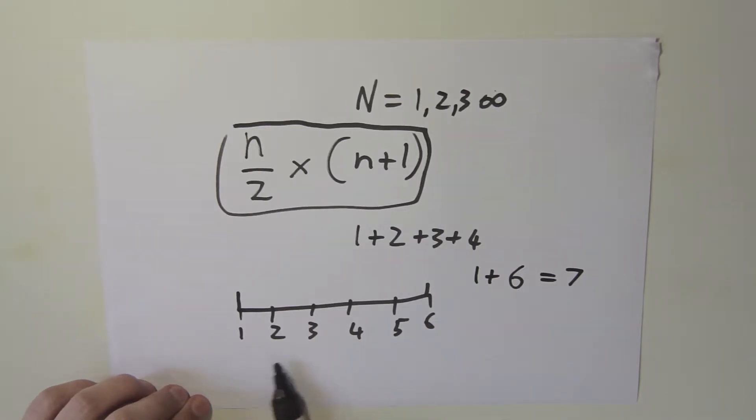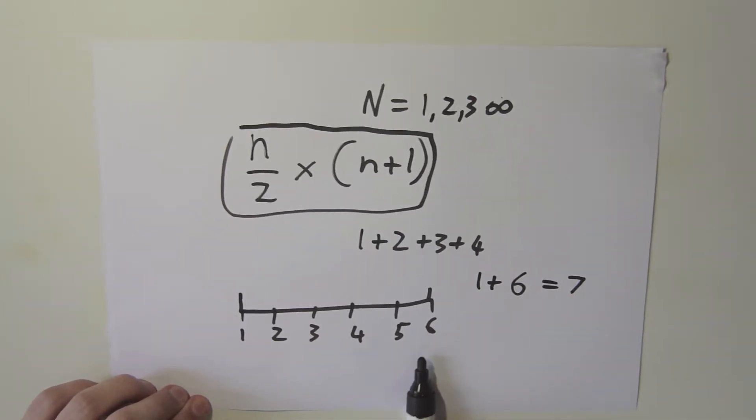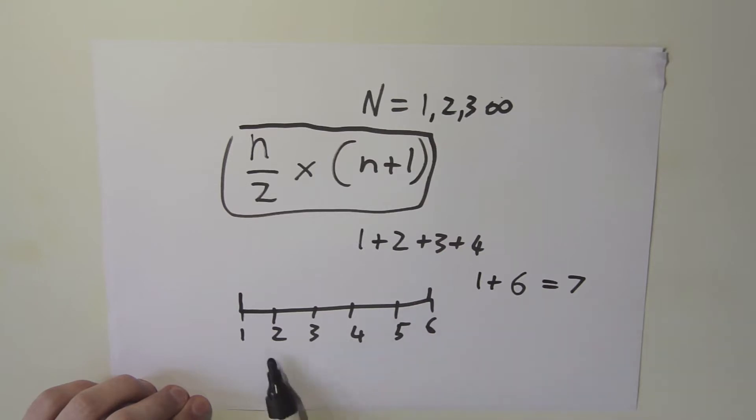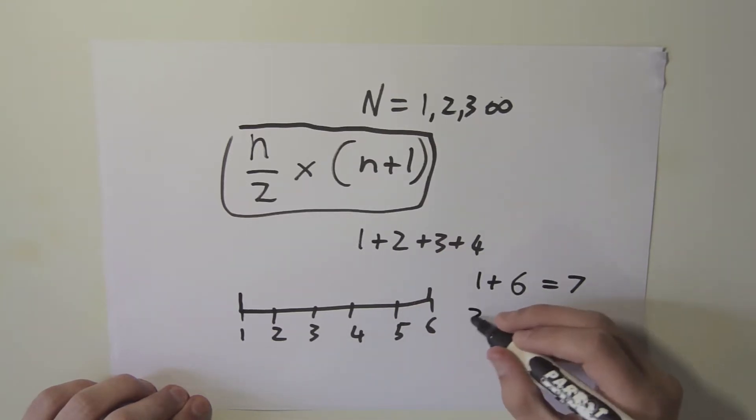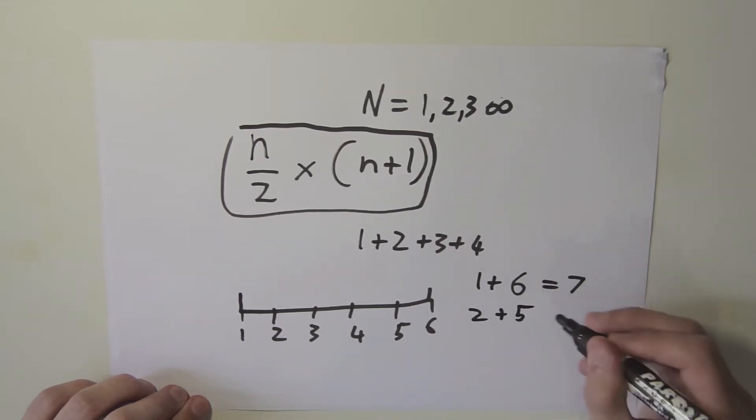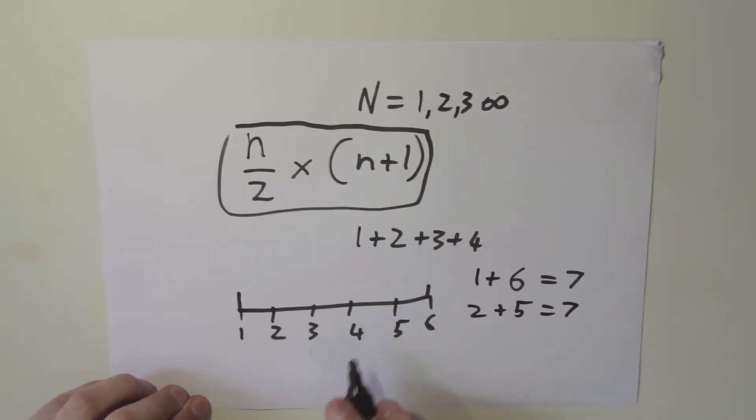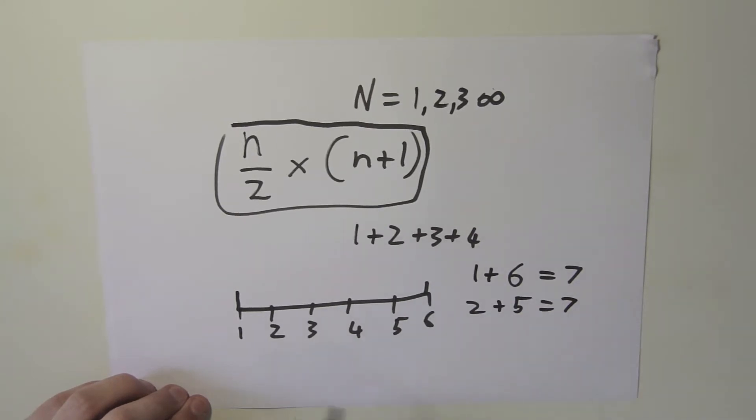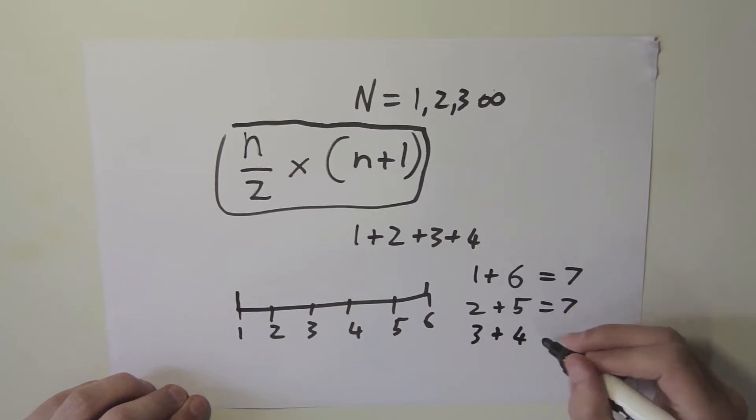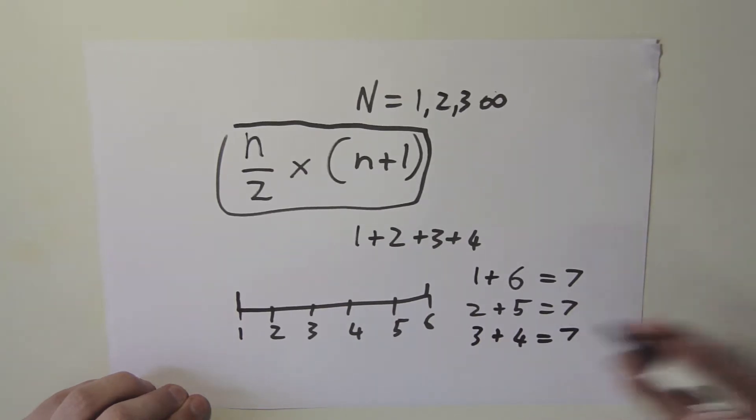As the smallest number increases by 1, the largest number decreases by 1. So when we add these two numbers together, 2 plus 5, we will still get 7 because as this increases by 1, it decreases by 1. So the net result doesn't change, it still stays 7. As we go to the third smallest and third largest, 3 plus 4, and this is the final one, we will still get 7.